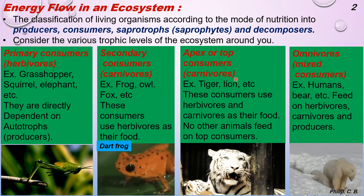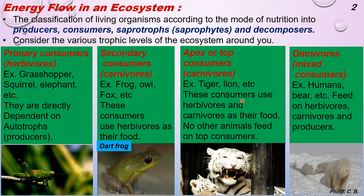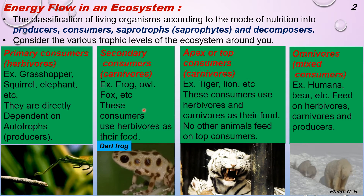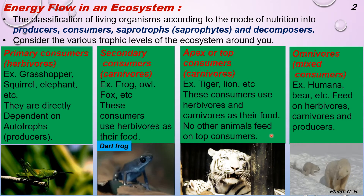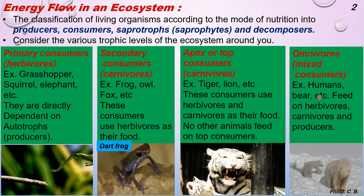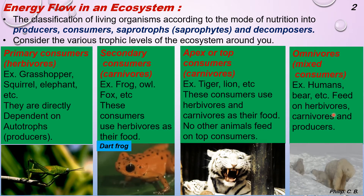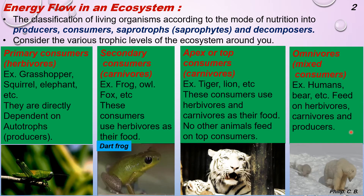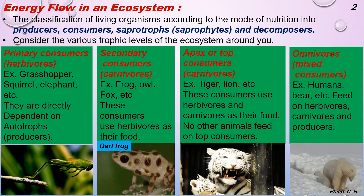Apex or top consumers are carnivores — for example tiger, lion, etc. These consumers use herbivores and carnivores as their food, depending on the first two consumer levels. No other animals feed on top consumers. The image shown here is of a white tiger. Fourth are omnivores — mixed consumers like humans and bear — which feed on herbivores, carnivores, and producers. The image shown is of an animated polar bear.